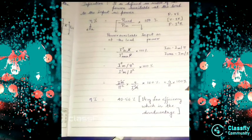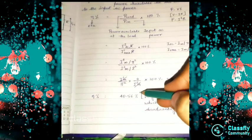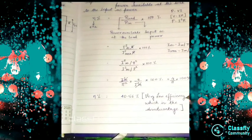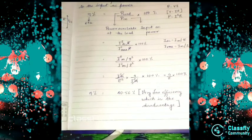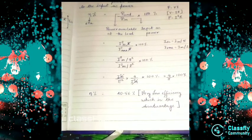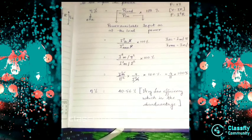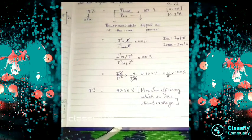When we solve this, we get 40.56%. This is very low efficiency, which is a disadvantage of the half wave rectifier. When we study the full wave rectifier, we will see the difference.